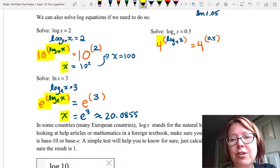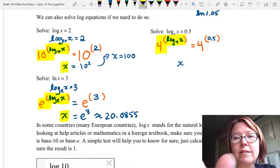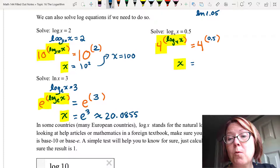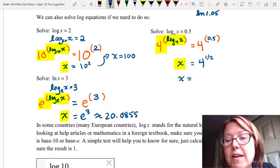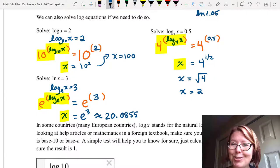On the left, I have a function composed with its inverse. And so this is just going to leave me with x. On the right, I have 4 to the 0.5 or 4 to the 1 half. Remember that a 1 half power is just a square root. So this is really x equals the square root of 4, which means that x equals 2.